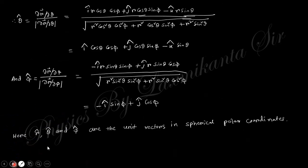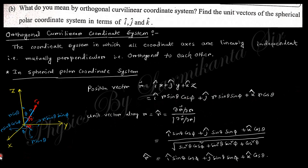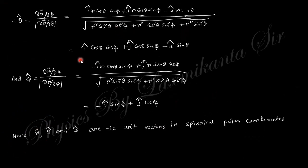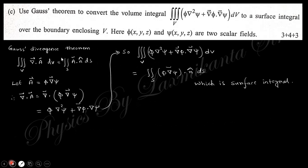Similarly, θ-cap equals (∂r-vector/∂θ) divided by its modulus. Taking the derivative with respect to θ and dividing by the modulus value gives θ-cap. Finally, φ-cap is obtained in a similar way. The r-cap, θ-cap, and φ-cap vectors are mutually perpendicular to each other.